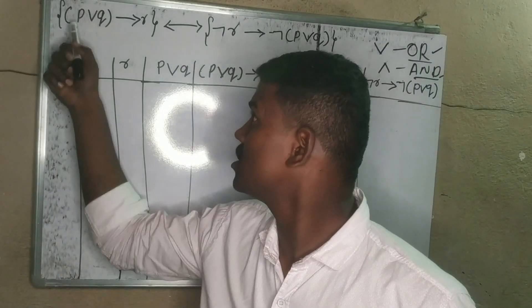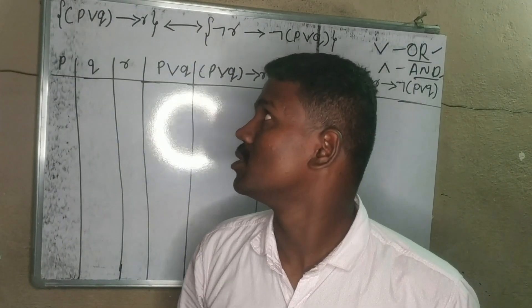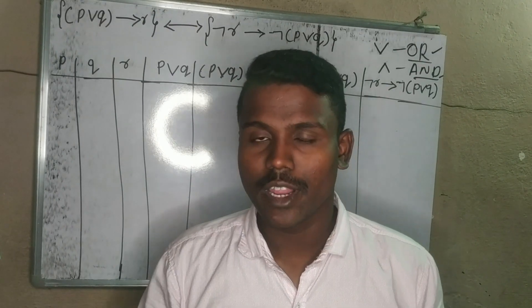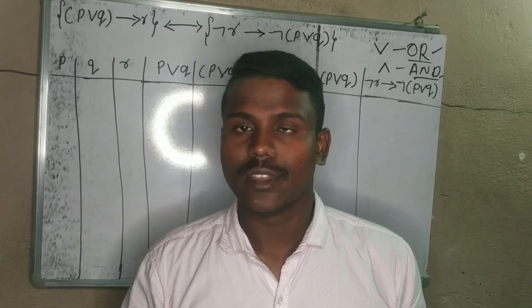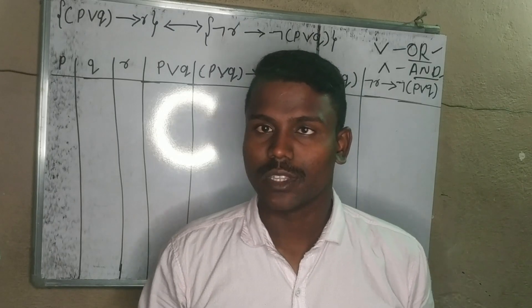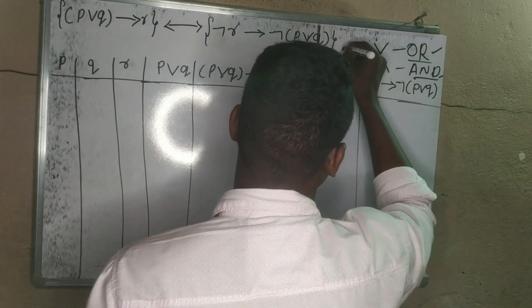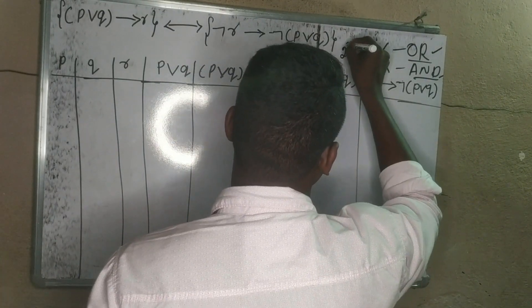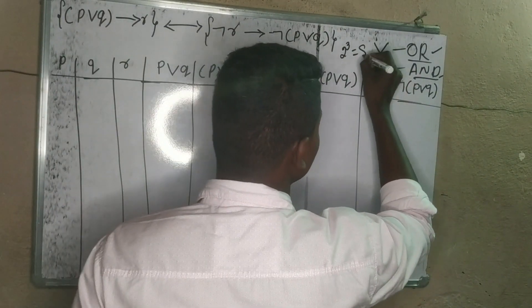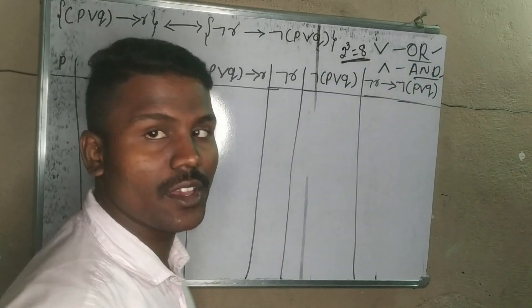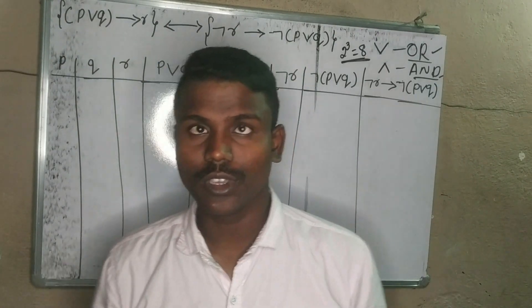The list of variables is 3 variables. With 3 variables, the number of combinations of values is 2 to the power of 3. 2 to the power of 3 is 8. So, we have 8 combinations of values to solve.